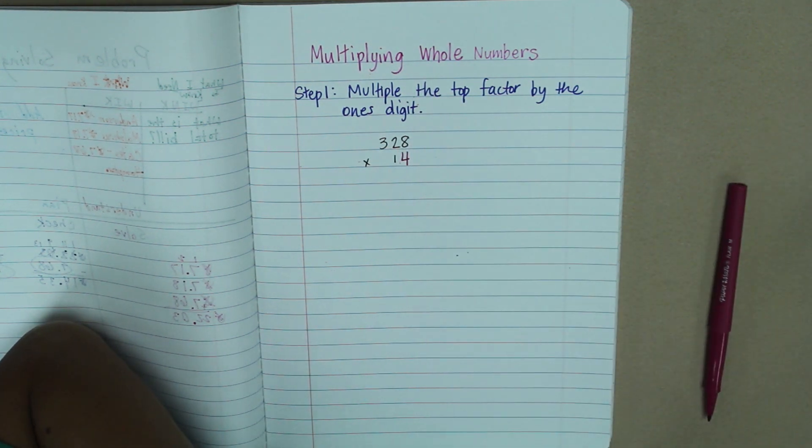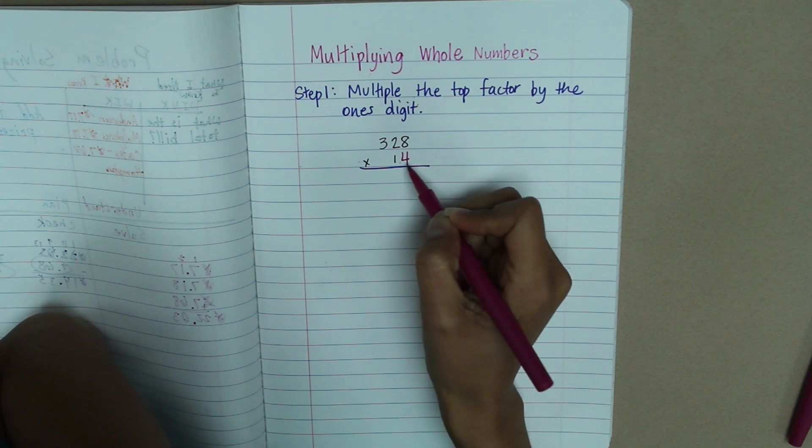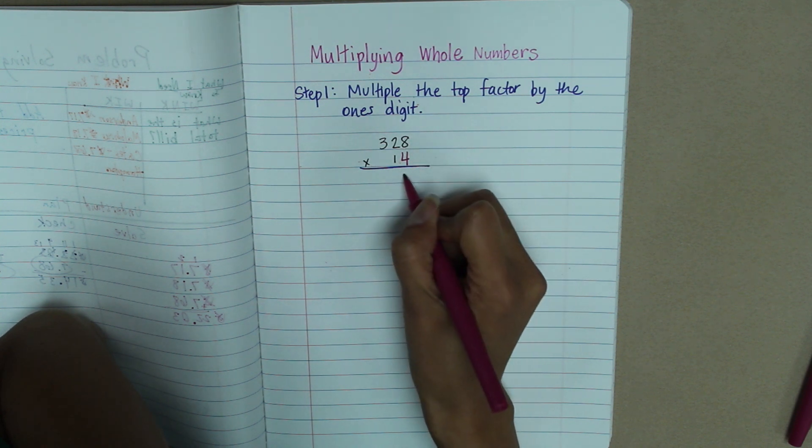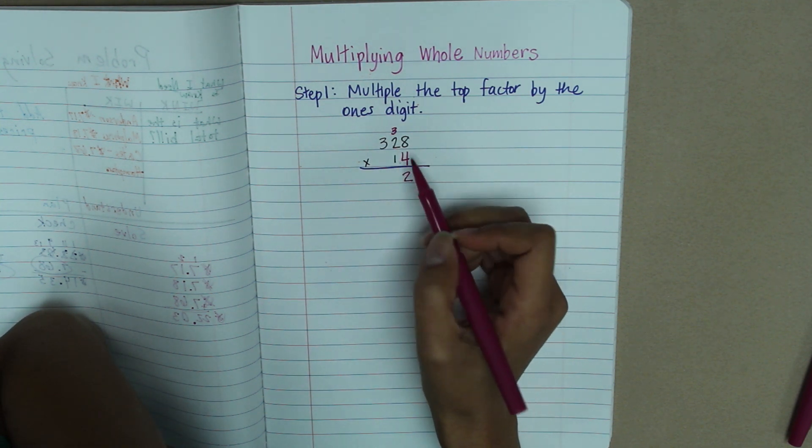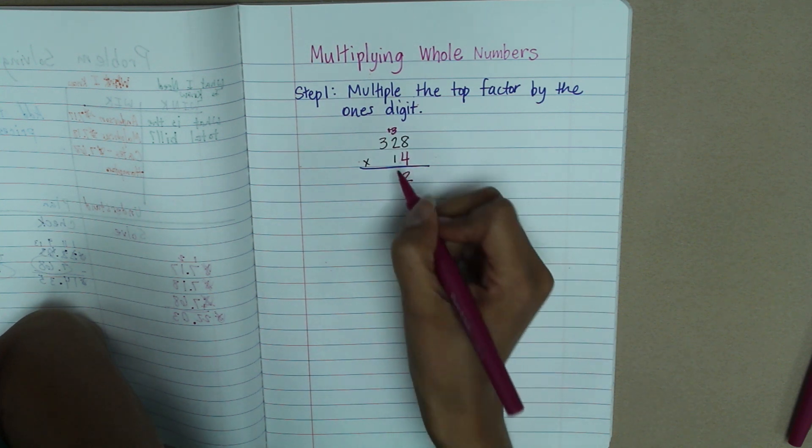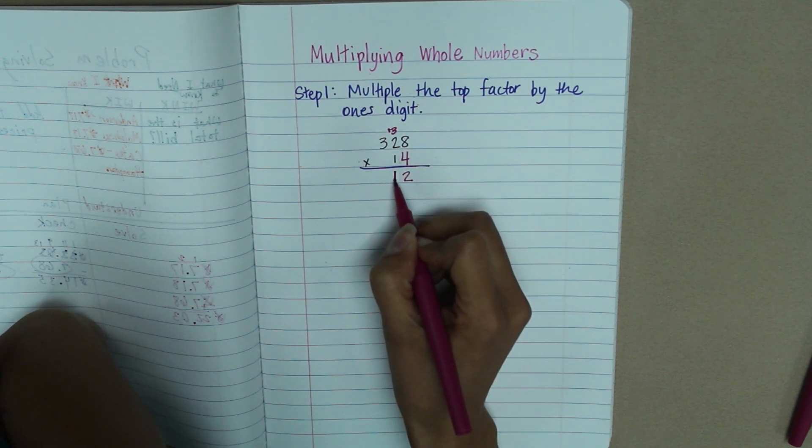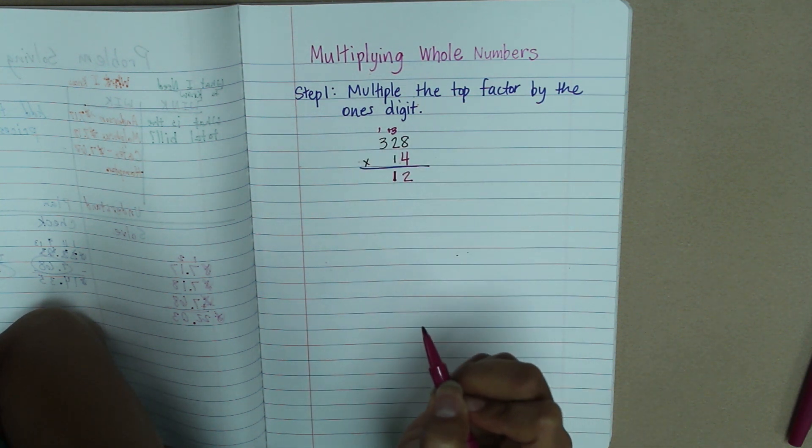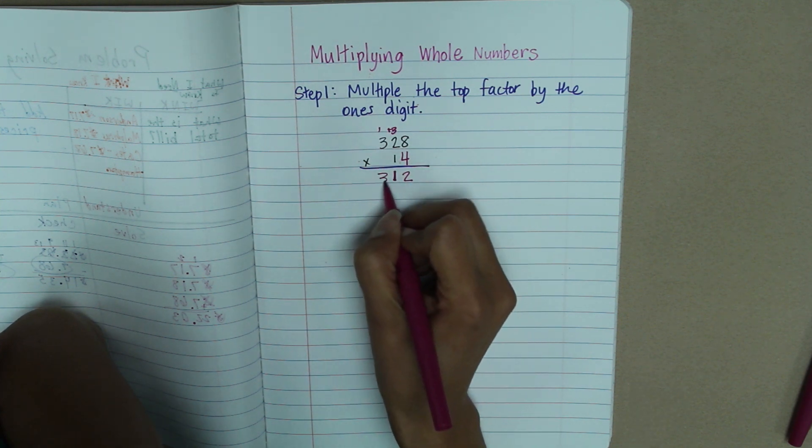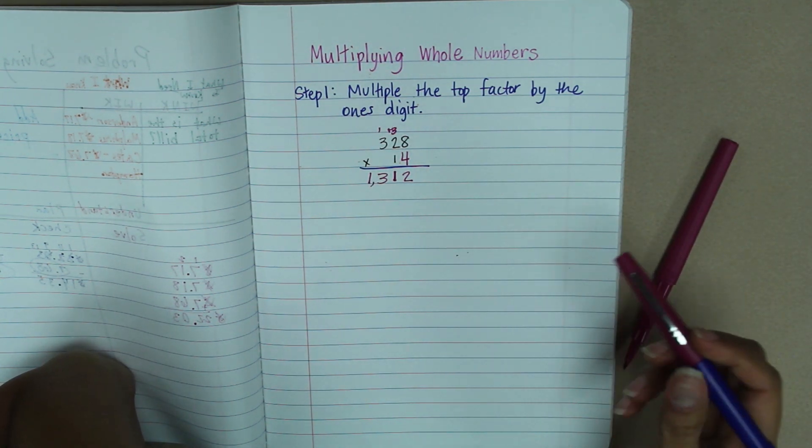As you notice, my one's place is in the purple color. So I'm going to begin by multiplying the top factor by the one's, like this. 4 times 8 is 32. 4 times 2 is 8, and then I add 3. And then I move my 11. For example, 11 does not fit in this one place, so I have to put it up above my hundreds. 4 times 3 is 12, and one more is 13. I have to remember my comma, and I get 1312.